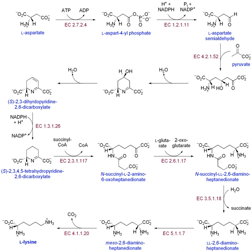Cysteine biosynthesis is a two-step reaction involving the incorporation of inorganic sulfur. In microorganisms and plants, serine acetyltransferase catalyzes the transfer of an acetyl group from acetyl-CoA onto L-serine to yield O-acetyl-L-serine. The following step, catalyzed by O-acetyl-serine thiol-lyase, replaces the acetyl group of O-acetyl-L-serine with sulfide to yield cysteine.